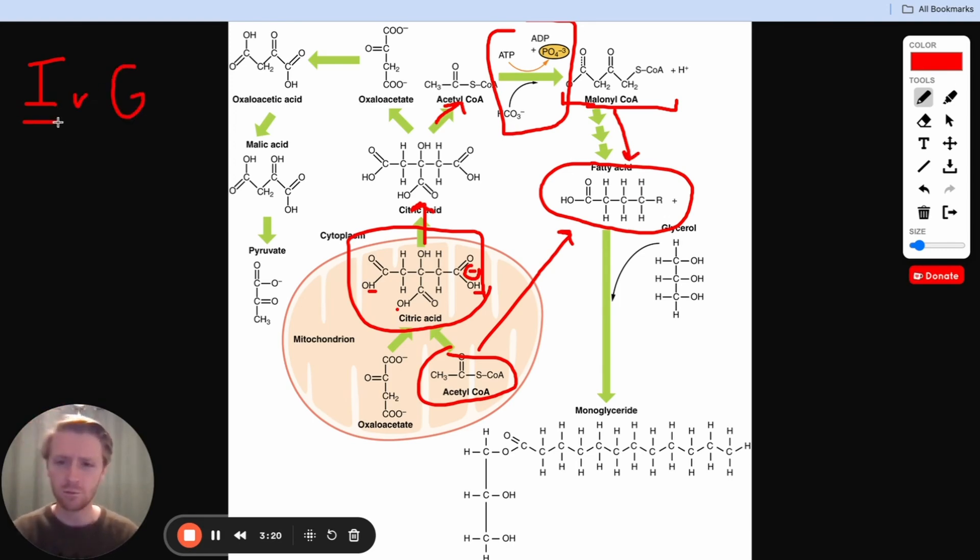Insulin is what our body releases when we have lots of glucose in the bloodstream. Maybe I just ate a ton of food, I'm doing good. And so it tells the body, hey, cells, bring in this glucose. Let's use this stuff. Let's store this stuff. We've got plenty. We can make some glycogen. We can store this as fatty acids. There's lots of different things we can do. We have plenty of extra energy and extra glucose floating around.